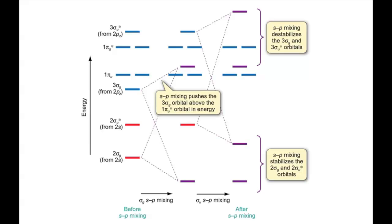Since the SP separation increases across a period, SP mixing is low for O2 and F2, as the atoms lie at the end of the second period.